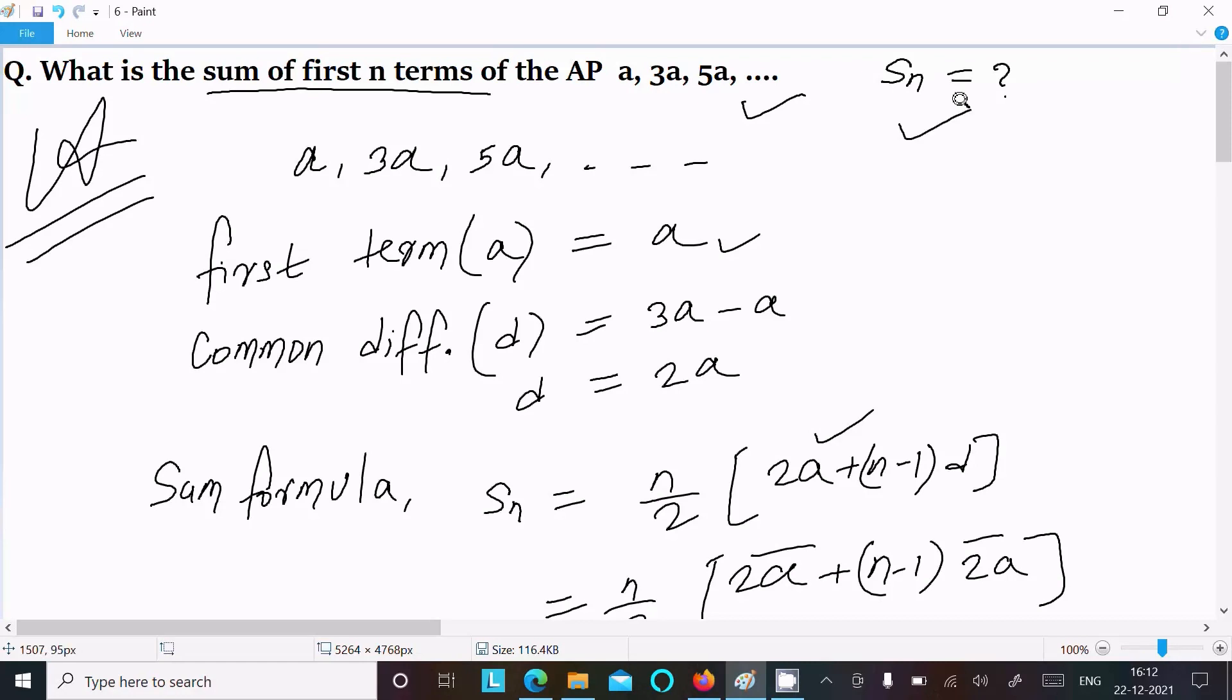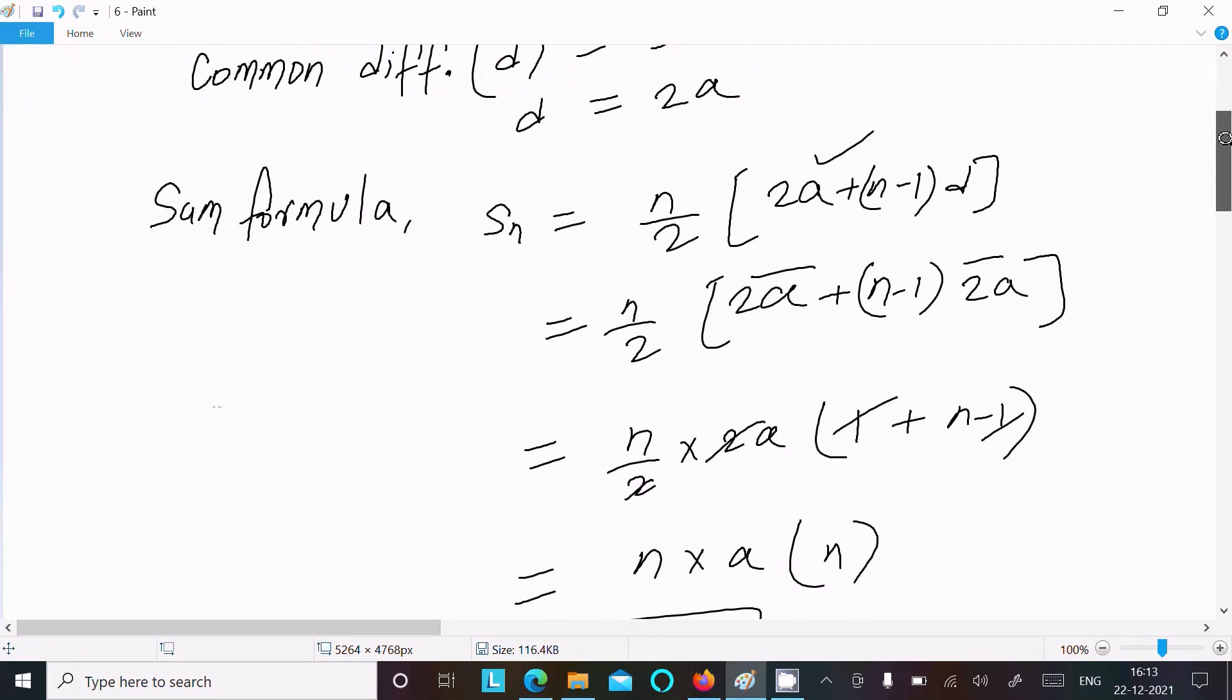First term is a, common difference d is second term minus first term, the difference between two consecutive terms. So 3a minus a or 5a minus 3a gives 2a. Use the formula, then put the value of a and d.